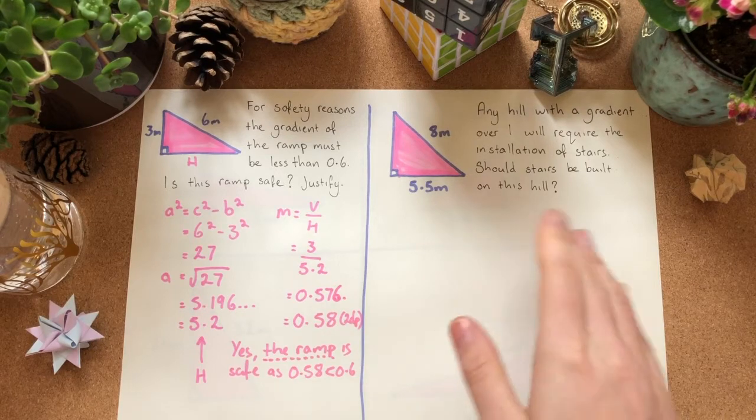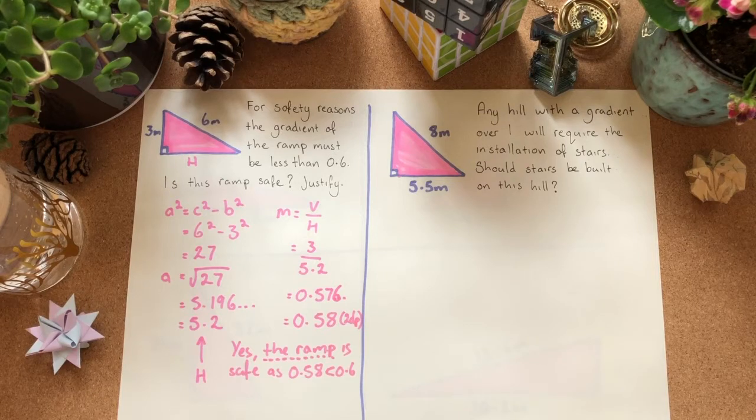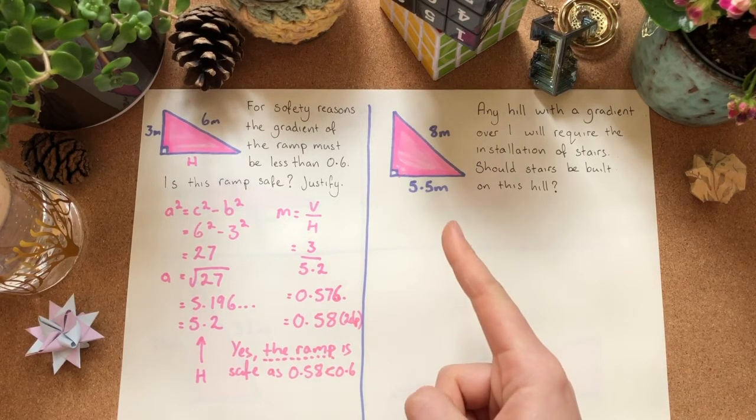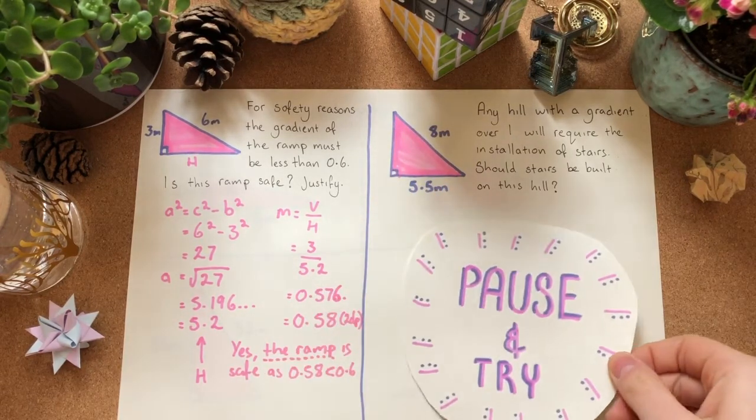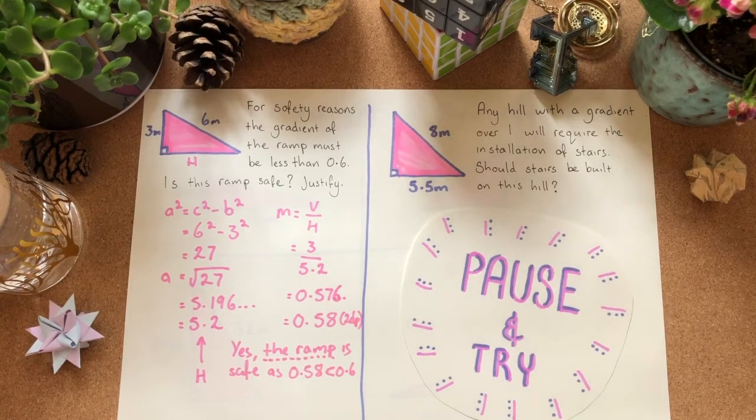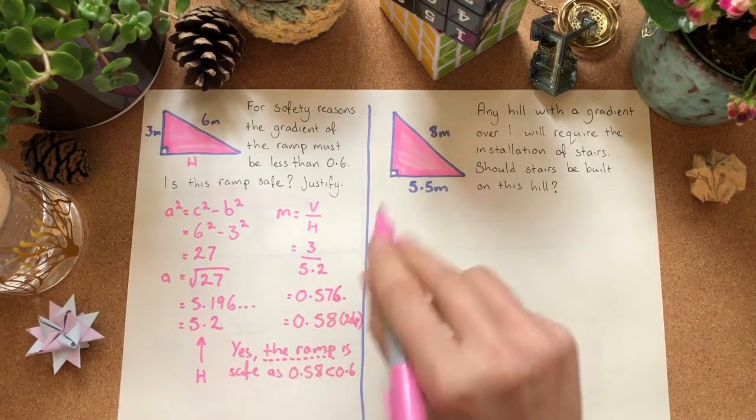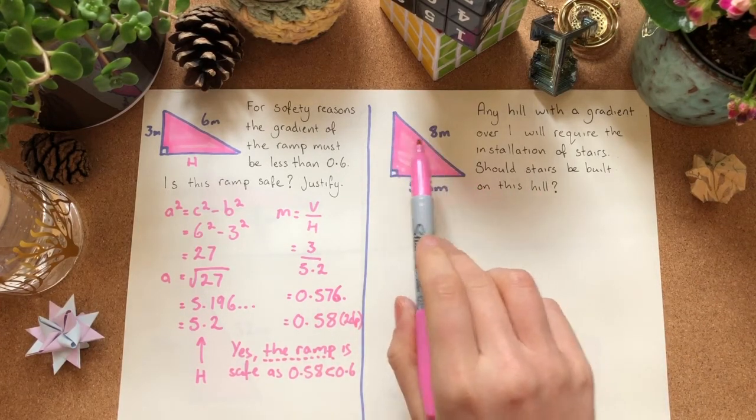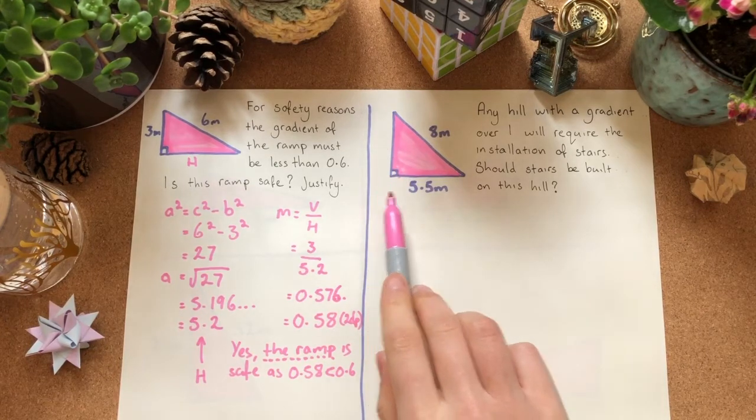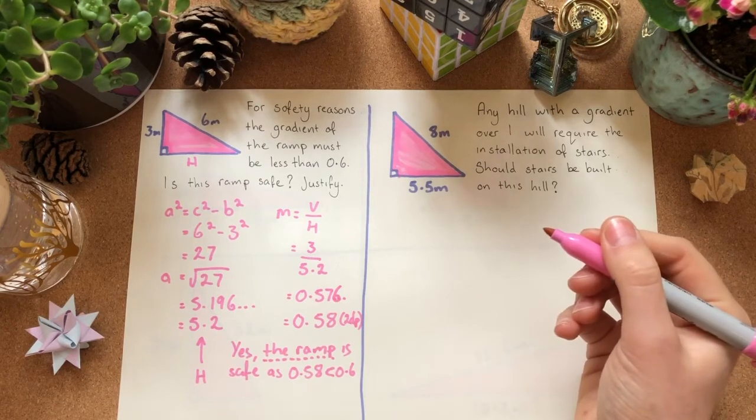Any hill with a gradient over one will require the installation of stairs, or steps. Should stairs be built on this hill? And we've got 8 here, 5.5 here. Pause and try. First of all, we don't have all of the information that we need. We have the hypotenuse, the longest side. We don't have the vertical height, but we do have the horizontal length. So we need to work out that vertical height. We're going to use Pythagoras.